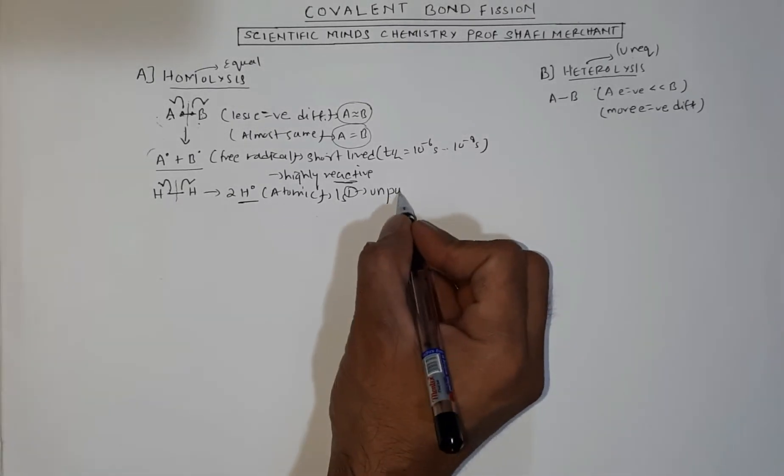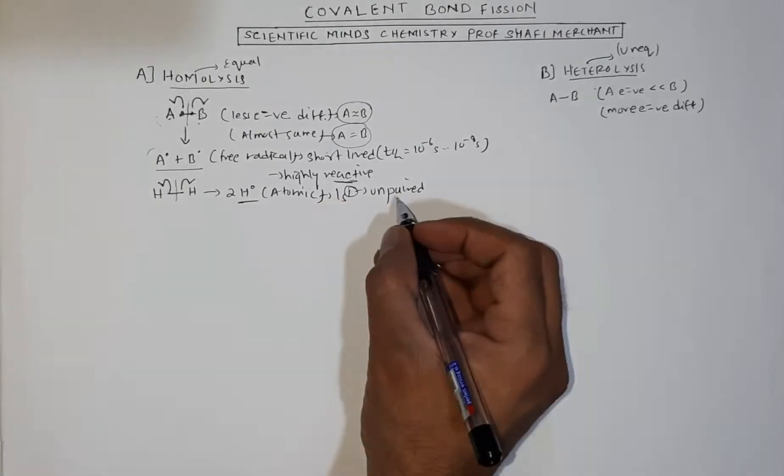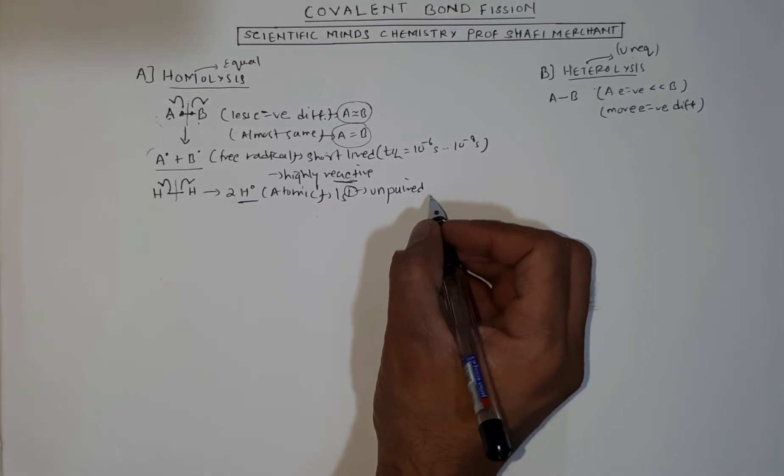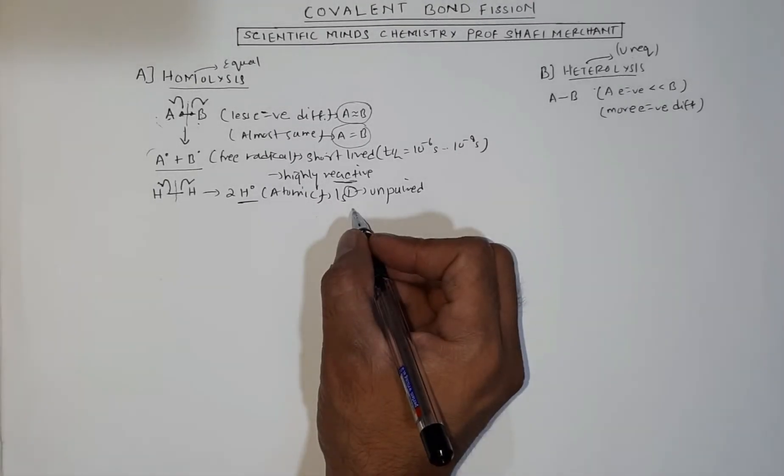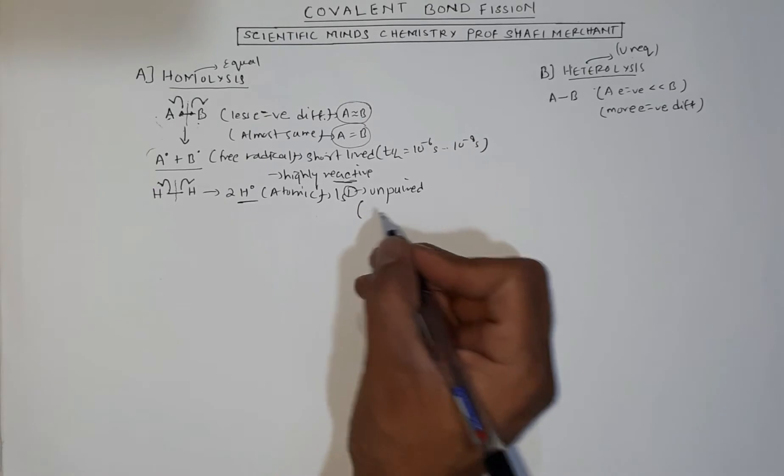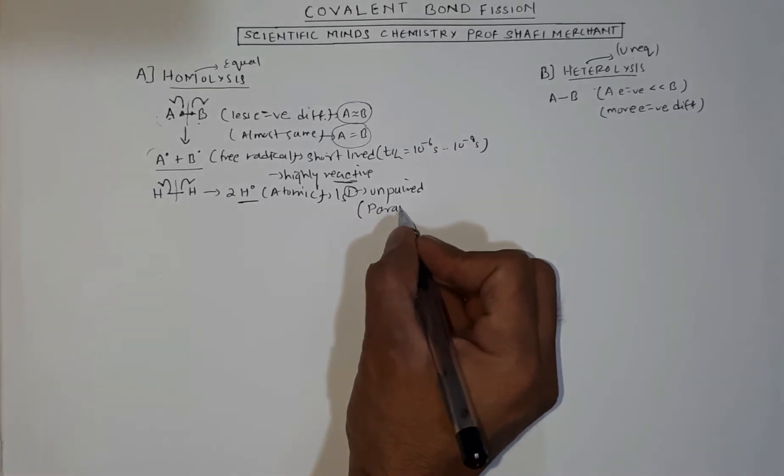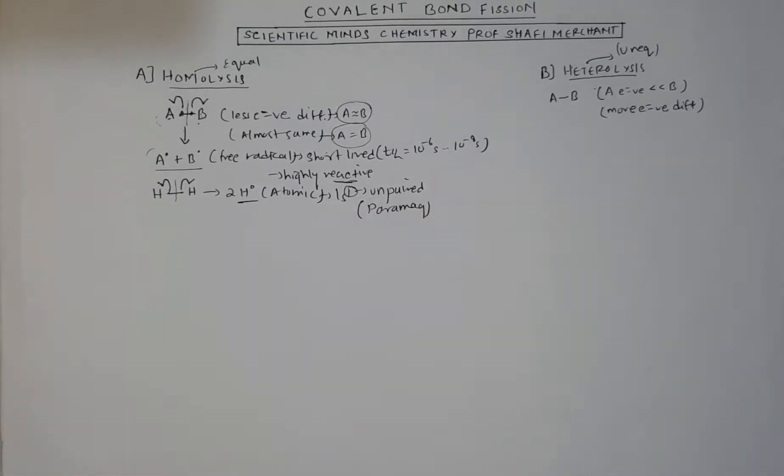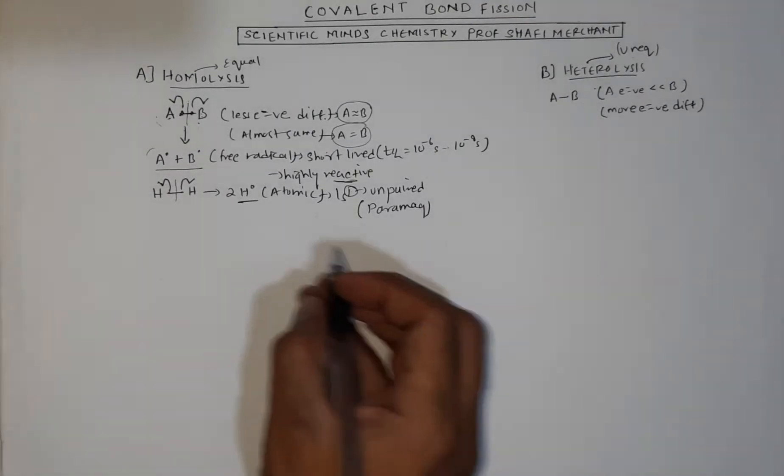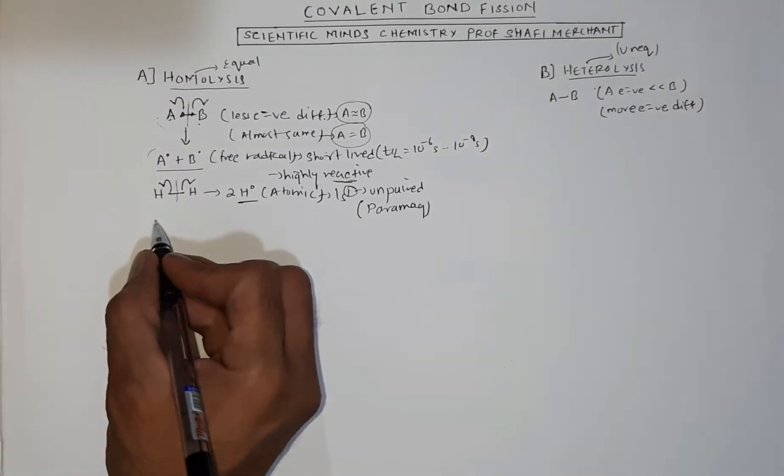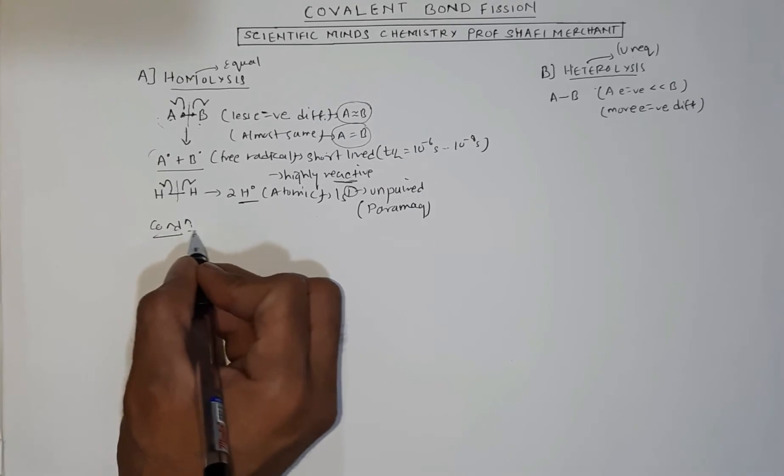Because of this unpaired electron, it shows a little bit of magnetic property, that is attracting in a magnetic field weakly. Therefore, these species are paramagnetic in nature. But what are the conditions for homolysis?